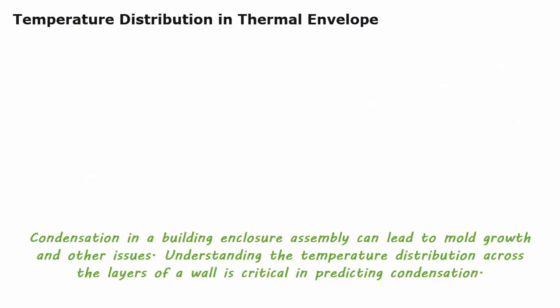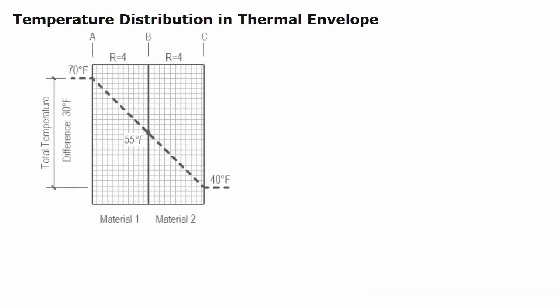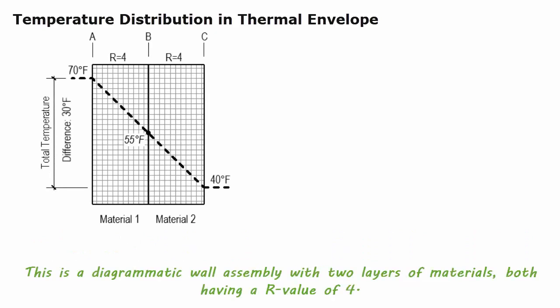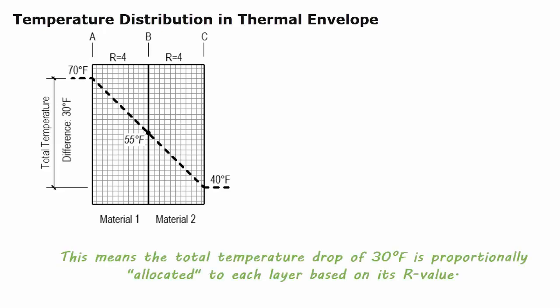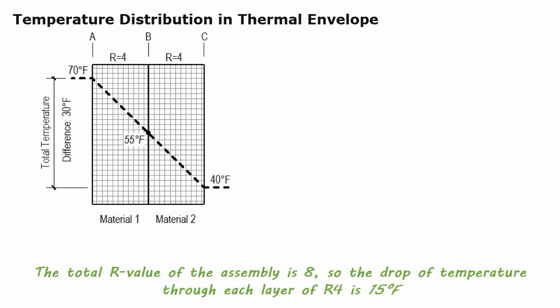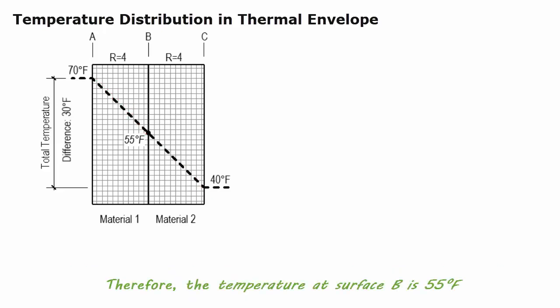Condensation in a building enclosure assembly can lead to mold growth and other issues. Understanding the temperature distribution across the layers of a wall is critical in predicting condensation. This is a diagrammatic wall assembly with two layers of materials, both having an R-value of 4. The temperature drop through a material is proportional to its R-value. With a total temperature drop of 30°F and a total R-value of 8, the drop through each R-4 layer is 15°F, so the temperature at surface B is 55°F.